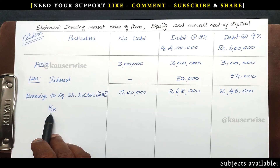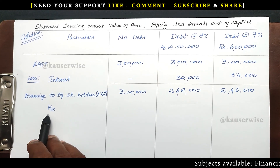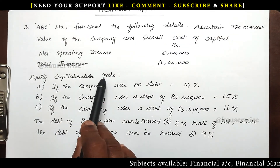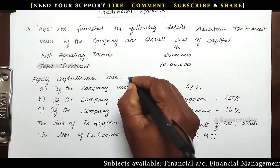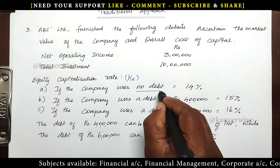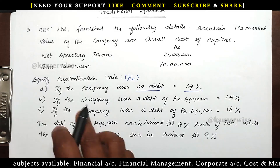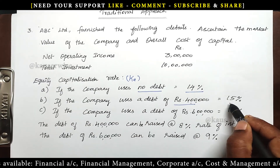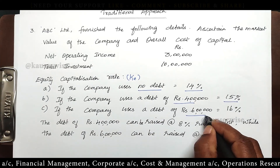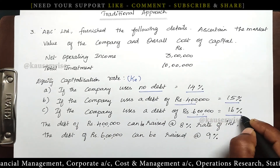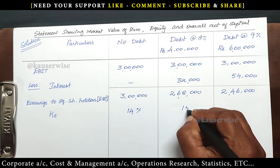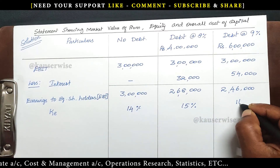Now take the KE values — cost of equity given in the problem. The equity capitalization rate: if the company uses no debt, KE is 14%; if the company uses debt of 4 lakhs, KE is 15%; and if the company uses debt of 6 lakhs, KE is 16%. So KE is 14%, 15%, and 16% for the three alternatives respectively.